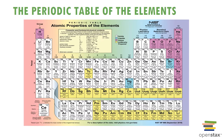Here's the periodic table of elements. You will not be responsible for memorizing it, but you should recognize the major elements and their chemical symbols. For example, oxygen is O, carbon is C, calcium is Ca, and potassium is K.